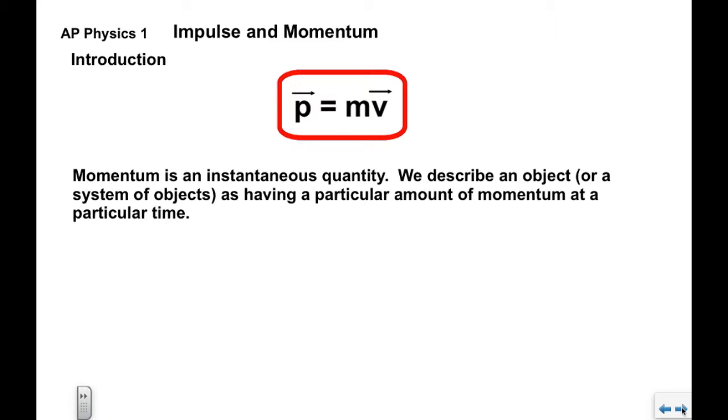Now we would also say that momentum is an instantaneous quantity. We describe an object or a little later on a system of objects as having a particular amount of momentum at a particular time.